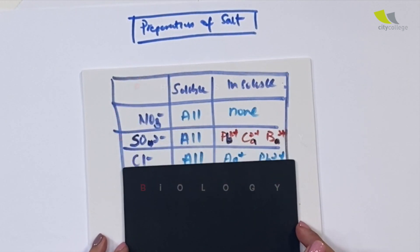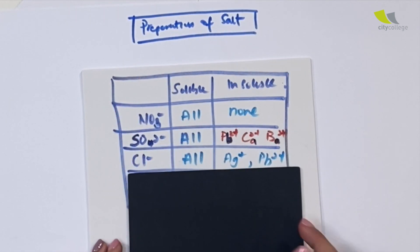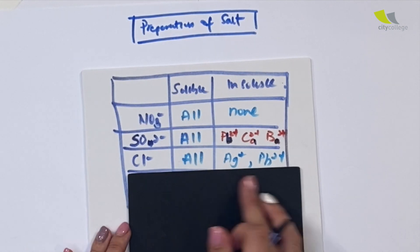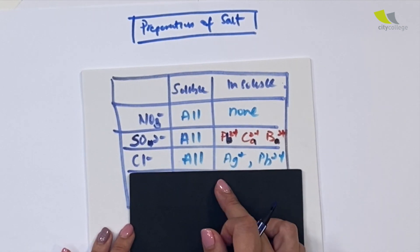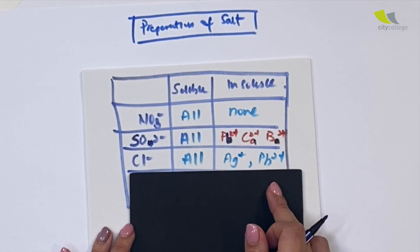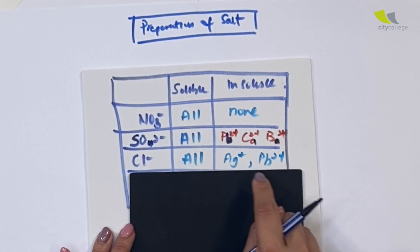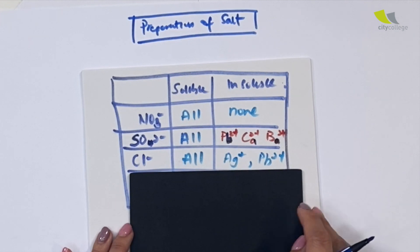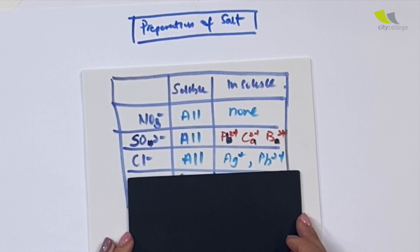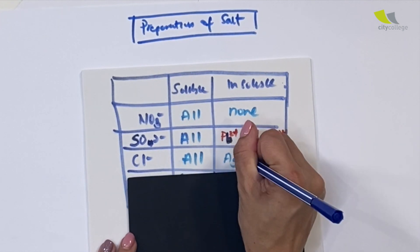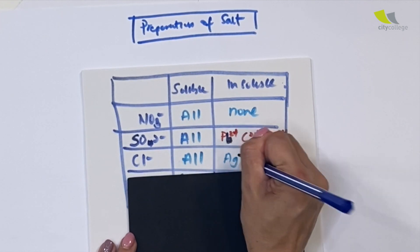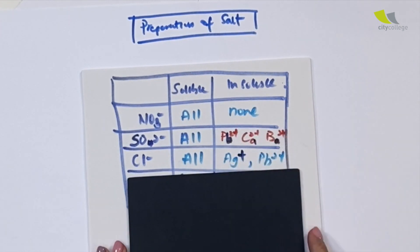Next up, you have your chloride. All are soluble except for Ag and Pb. Ag is silver, Pb is your lead again. Take note that your silver has a charge of plus one.